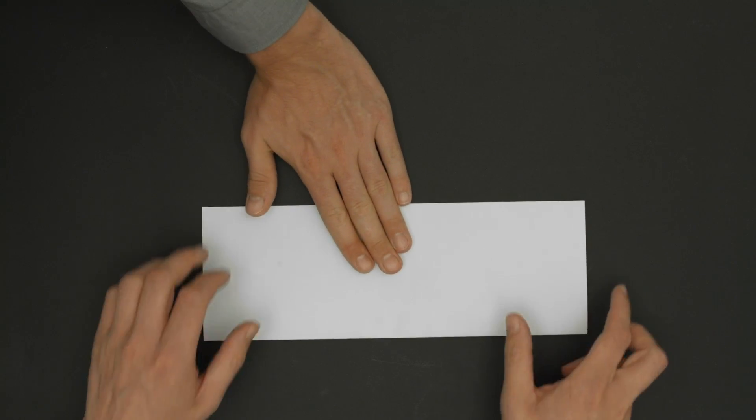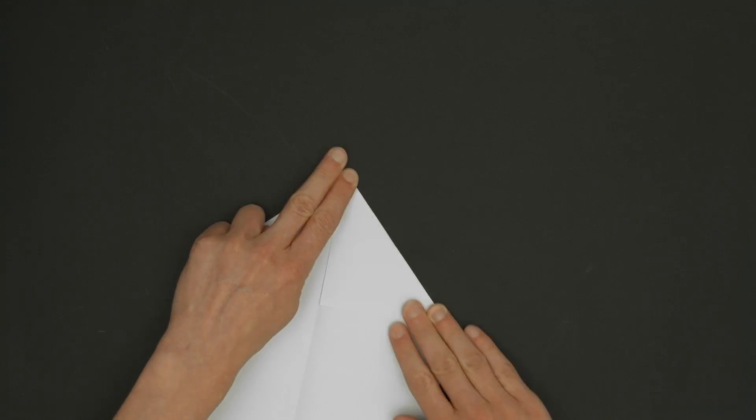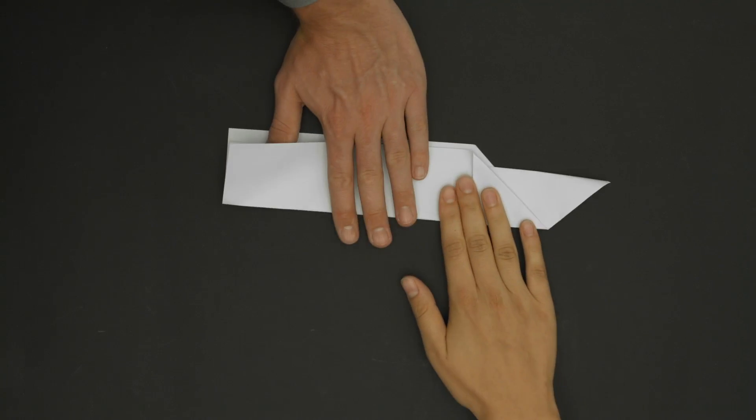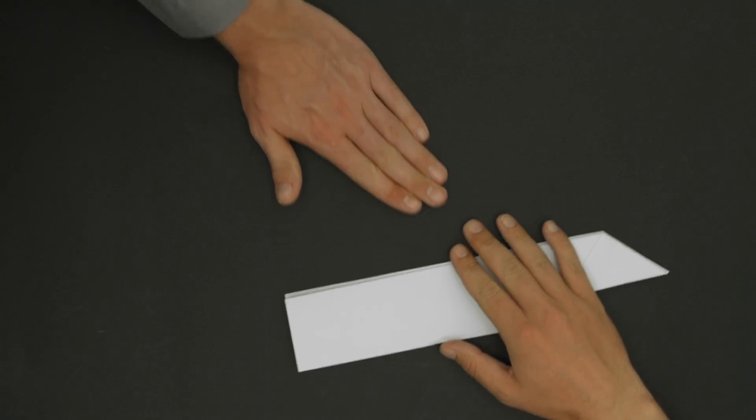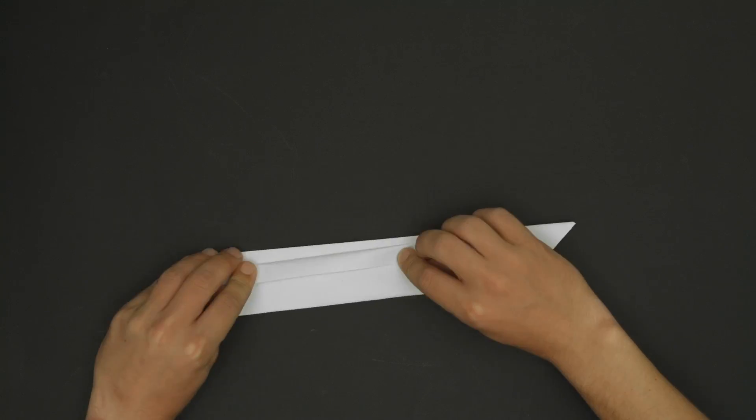Each module does a different work step. In our case, a different folding step, and relays the result back to the central hub until the paper plane has been completely folded at the end.